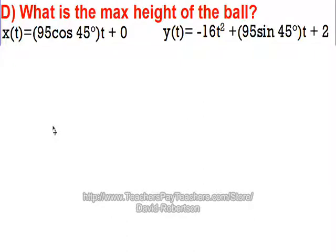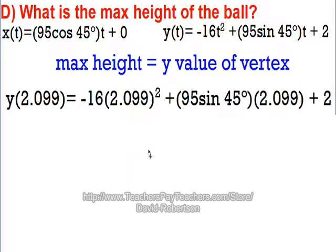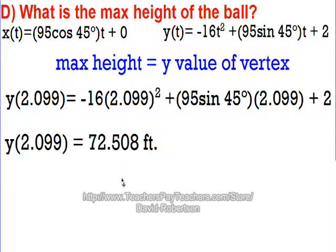Okay, we just discovered when the ball reached its maximum height. Now we're going to find out what is that actual maximum height. So, in order to do that, I'm going to take that 2.099 seconds that I just found and plug that in for t in my t values for the y equation, since we were talking about height. So I'm finding the height, y, when the time is 2.099. So I plug in 2.099 for t every time I see it in that equation. And I end up getting 72.508 feet.